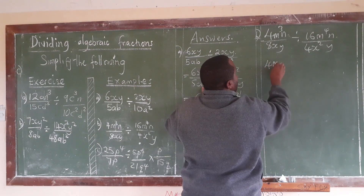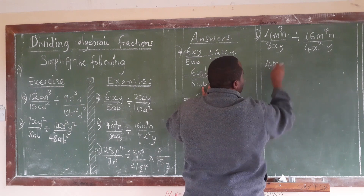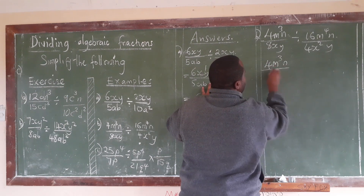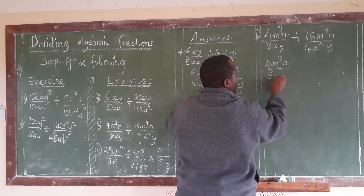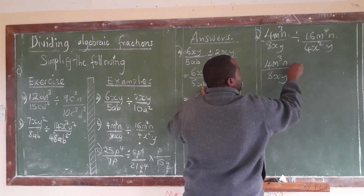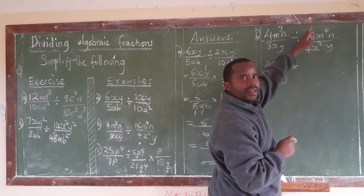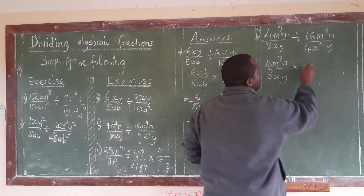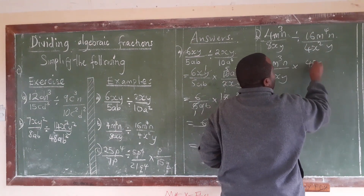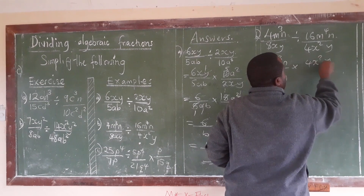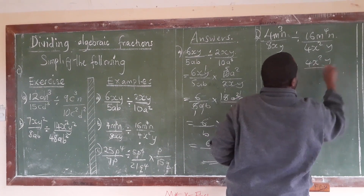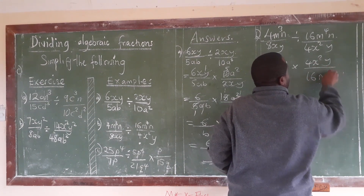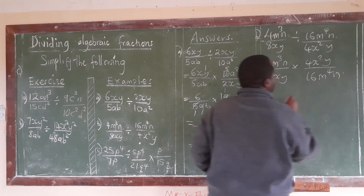So we have 4M to the power 3, N over 8XY — you swap — times the reciprocal, which is 4X squared, Y divided by 16M to the power 4, N.